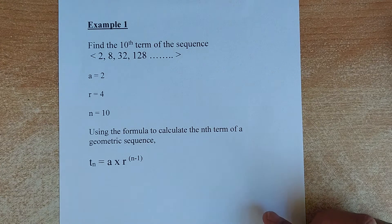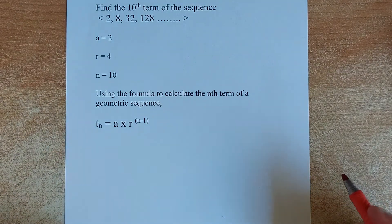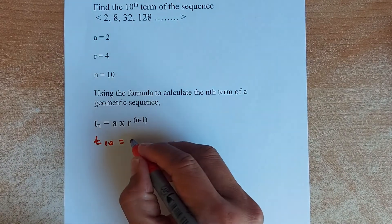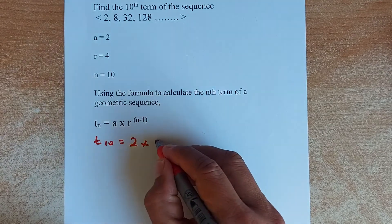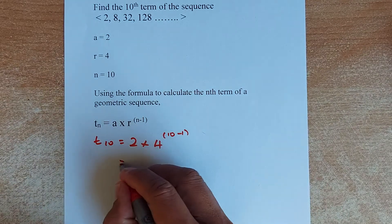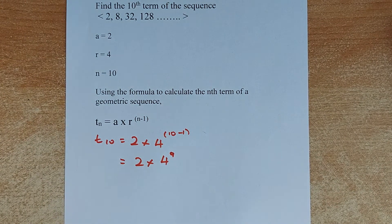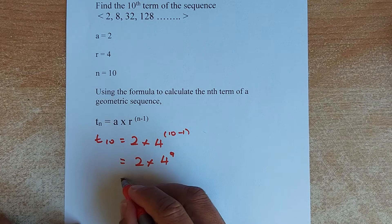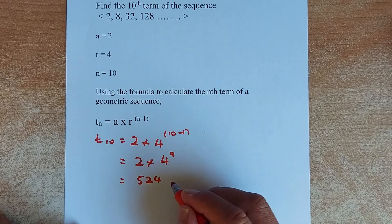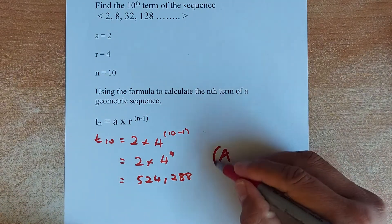Now we are going to use the formula TN equals A multiplied by R to the power of (N minus 1). We are looking for the tenth term, so T10: A is replaced with 2, R is replaced by 4, and N is 10 minus 1. Simplify: 2 multiplied by 4 to the power of 9. You put this in your calculator — 2 times 4 to the power 9 — and the answer comes out to 524,288. That will give you an achieve in the geometric sequences.